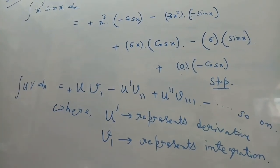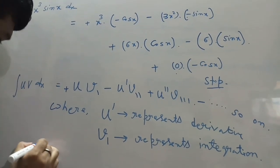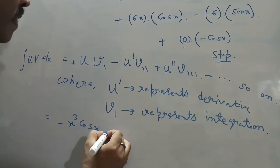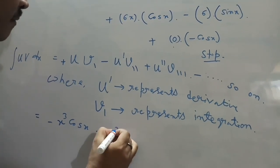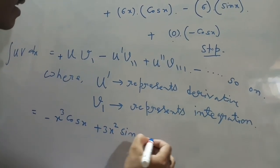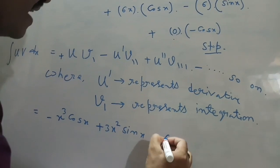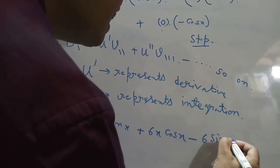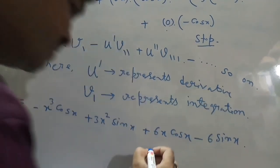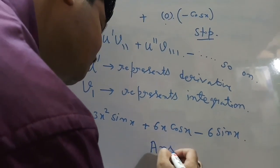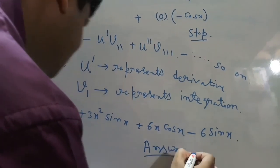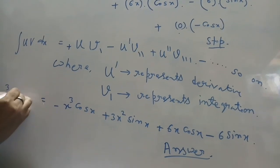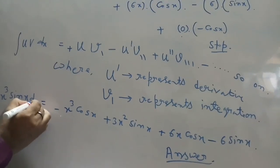Therefore, after simplification, the answer to the successive integration is: −x³·cos(x) + 3x²·sin(x) + 6x·cos(x) − 6·sin(x) + C. This is the required answer — the integral value of ∫x³·sin(x)·dx.